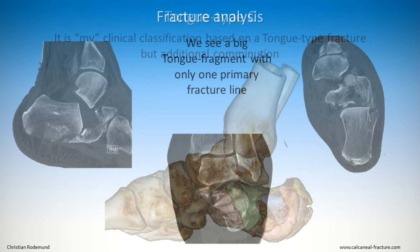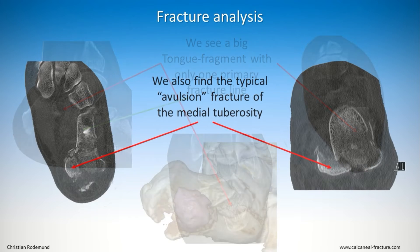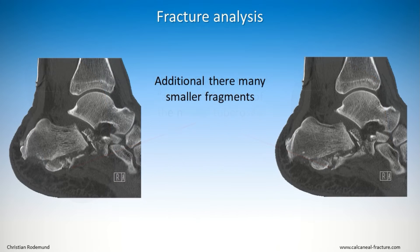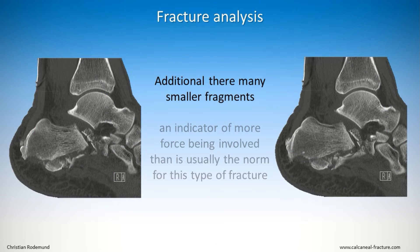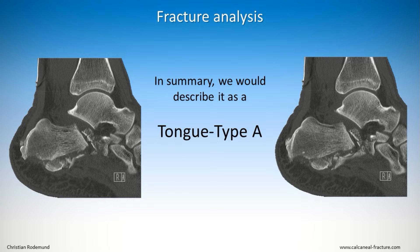With additional fragments I call them tongue-type C. Returning to our fracture, we observe a large tongue fragment with only one fracture line and an avulsion fracture on the medial tuber. Additionally there are many smaller plantar and central fragments, less common in this type of fracture. Following my system I would classify it as tongue-type A.